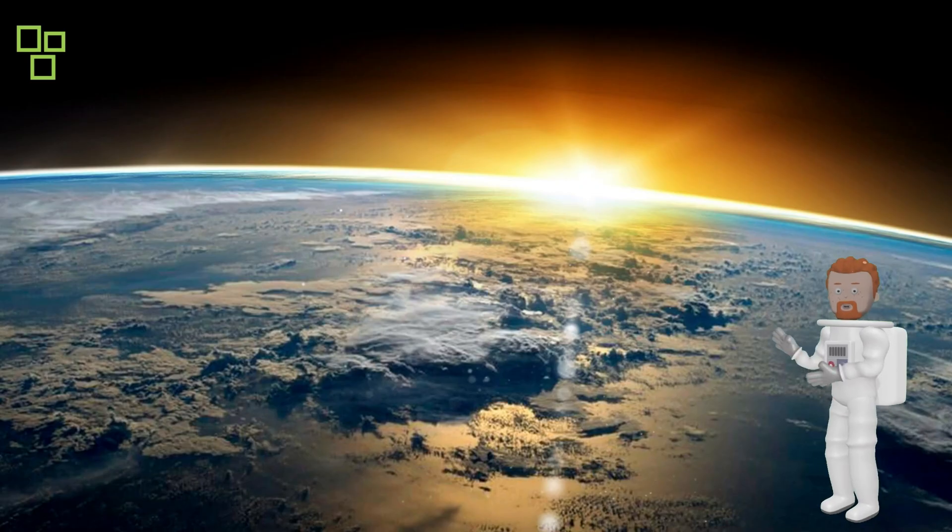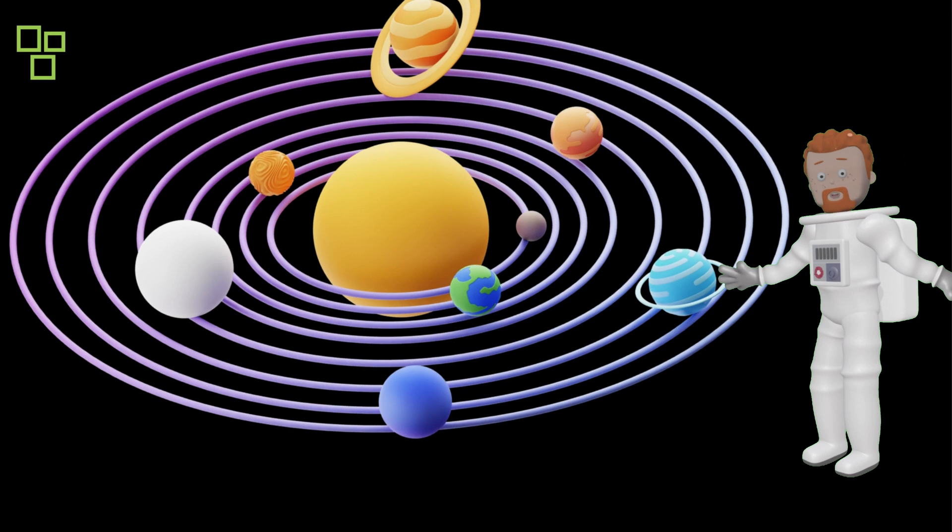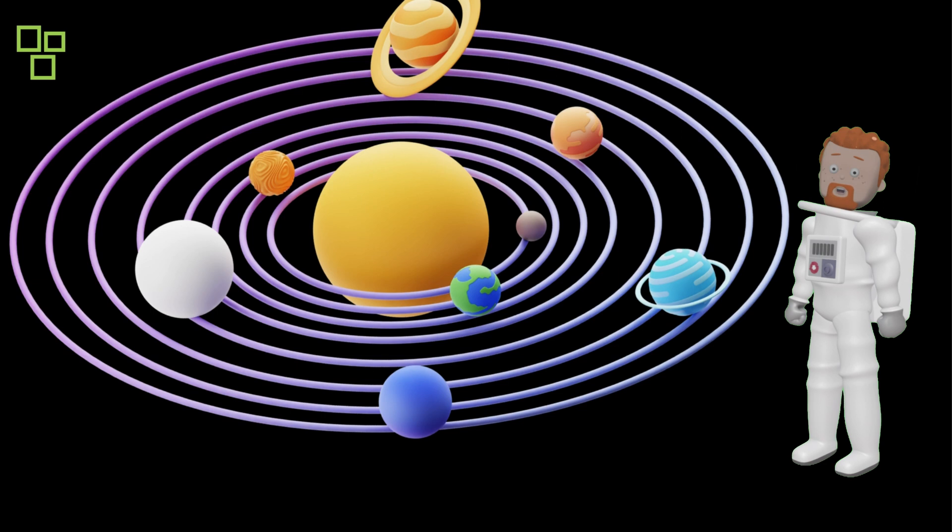Our first stop takes us to the heart of our solar system, where a giant ball of gas shines brightly. Can you guess what it is? That's right, it's the sun, our closest star and the source of light and warmth for our planet.